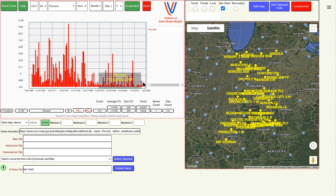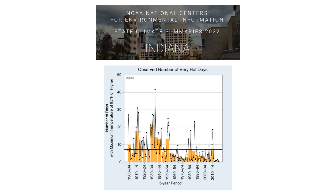During the year 1936, almost 11% of the days in Indiana were over 95 degrees Fahrenheit, which is pretty astonishing. To put this in perspective, during last year's heat wave, less than 1% of days in Indiana were over 95 degrees. If we go to NOAA's state climate summary for Indiana, we can see the exact same thing: hot temperatures in Indiana were much more common prior to the year 1960.